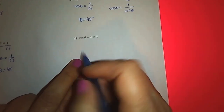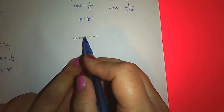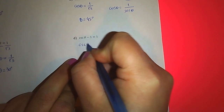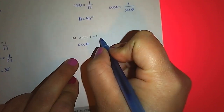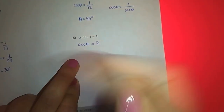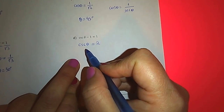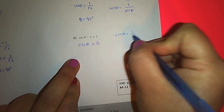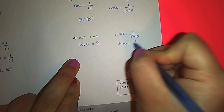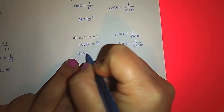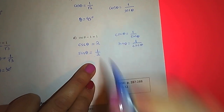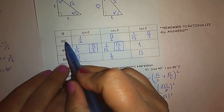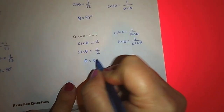Let's look at part d: cosecant theta minus one equals one. To solve for theta we need to isolate cosecant theta. Moving negative one to the right side gives us cosecant theta equals two. We need to convert to a primary trig ratio: cosecant theta is one over sine theta, so sine theta equals one over cosecant theta, which gives sine theta equals one over two. Checking the table, if sine theta is one over two then theta must be 30 degree.